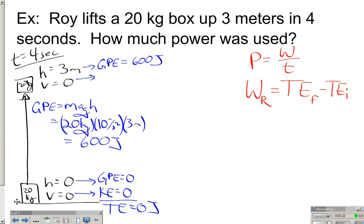So after Roy lifts the box, it's got 600 joules of gravitational potential energy. Since it's ending at rest, we can assume he sets it on a shelf or something, the KE is back down to zero. So the total energy that the box ends with is 600 joules. It changed because Roy did work. So let's figure out how much the total energy changed. So I'm going to go over here. TE final ended up with 600 joules of energy. It began with zero joules of energy, and so the work that Roy did is 600 joules.